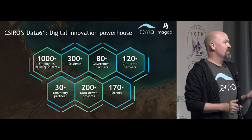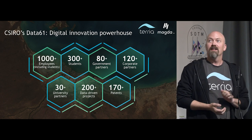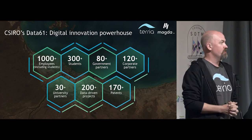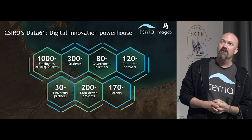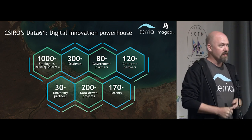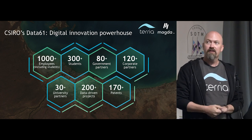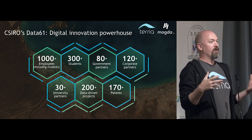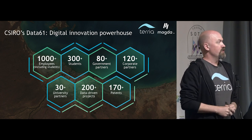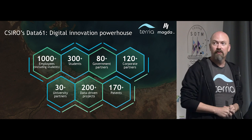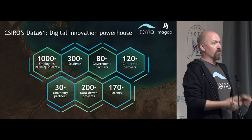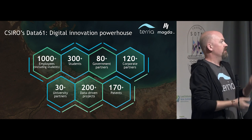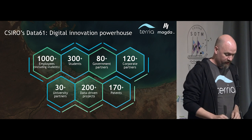CSIRO is the National Science Agency for Australia. Data61 is the data and digital business unit within CSIRO. We work in the Web Geospatial Systems Group, which is where we do geospatial stuff, open data, all this kind of good stuff.